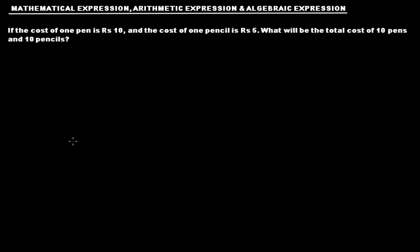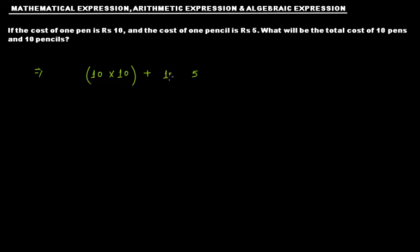You will say that's a really easy problem because we have done such problems in arithmetic. So in order to solve this, you will say that since the cost of one pen is rupees 10, the cost of 10 pens will be 10 times 10. Plus, since the cost of one pencil is 5, the cost of 10 pencils will be 10 times 5. When you solve this you will get rupees 150.